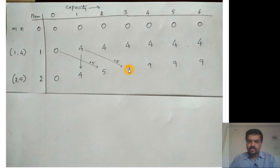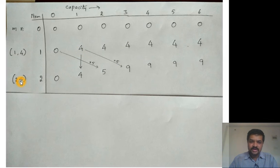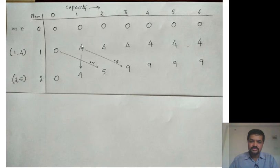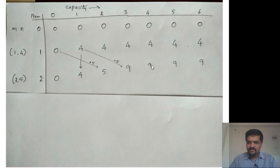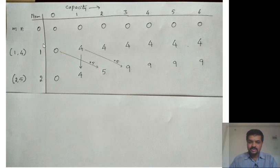For f(2, 3): max of 4 and (5 + f(1, 1)) = 5 + 4 = 9. Since 9 > 4, the solution is 9. Similarly for f(2, 4), f(2, 5), and f(2, 6) it remains 9 all the way, because at this point we are already using both items and we don't have any more items to put into the knapsack.